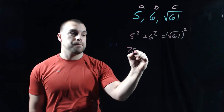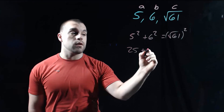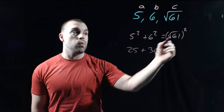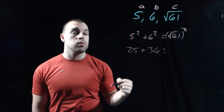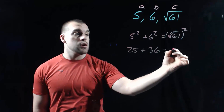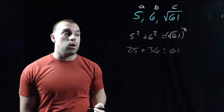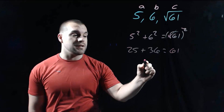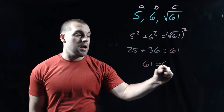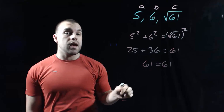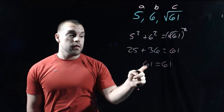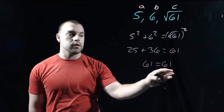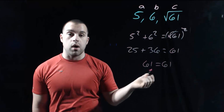5 squared is 25. 6 squared is 36. And on the right-hand side, if we square the square root of 61, the square and the square root cancel each other out because they're inverses of each other, so all we have left over is 61. On the left-hand side, 25 plus 36 is 61, and on the right-hand side we've got 61. This is a case where we've got a right triangle — the left-hand side equals the right-hand side, so this one is a right triangle.